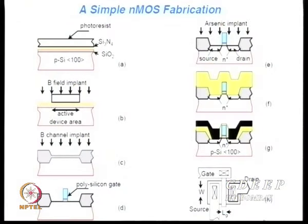A minimum of 5 masks are shown here; the simplest NMOS transistor can be made with 5 masks. Currently, CMOS ICs require 32 to 36 masks. Typically, 1 to 5 million dollars per mask is the cost, so one can imagine the investment required when adding masks.